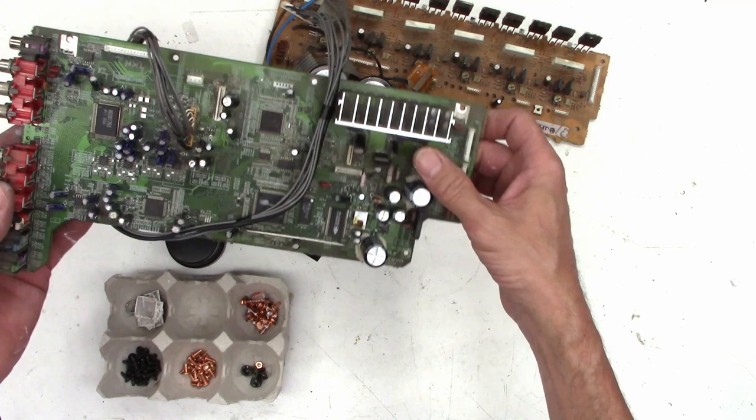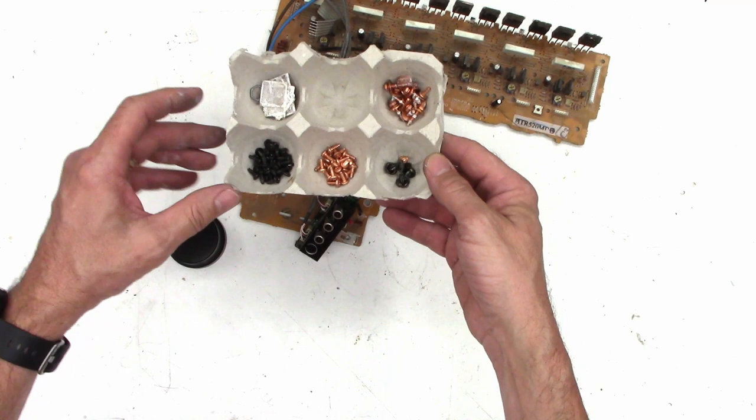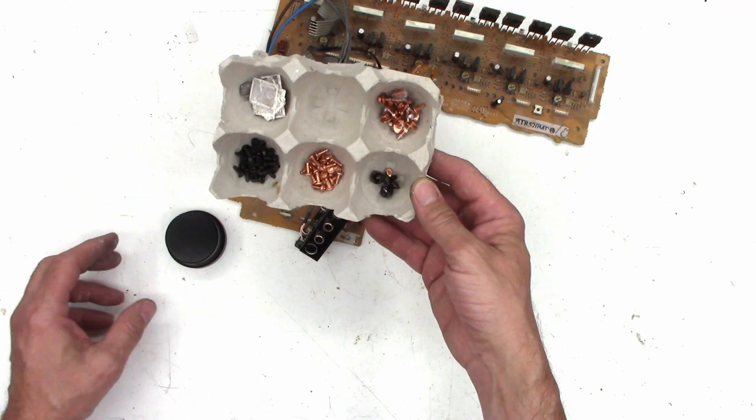Once again, all the screws, I always save all the Mica insulators as well because I never know if I'm going to need one down the road. I saved the volume control knobs. I've had quite a few receivers come in with missing knobs, so that's always a bonus feature.